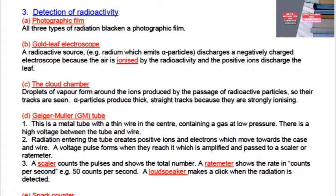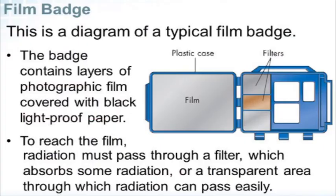Starting with the photographic film — this is a diagram of a typical film badge. The badge contains layers of photographic film covered with black light-proof paper. To reach the film, radiation must pass through a filter which absorbs some radiation, or a transparent area through which radiation can pass easily. It then blackens the photographic film. All three types of radiation tend to blacken a photographic film.